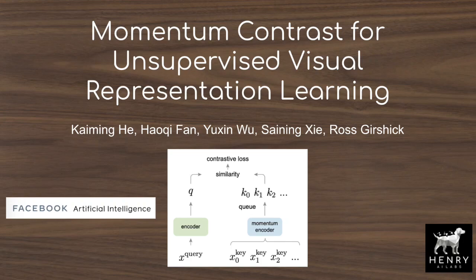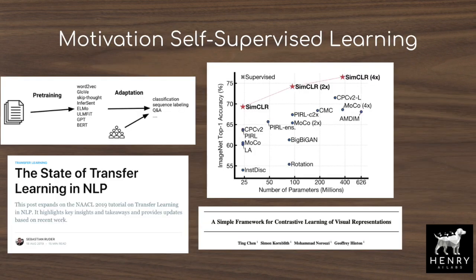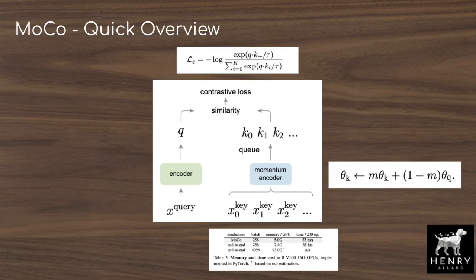This video will explain Momentum Contrastive Learning from researchers at Facebook AI. Contrastive learning is about forming representations that help distinguish one object from another, such as being able to distinguish a lion from a bottle of water. Momentum Contrast views this problem as a dictionary problem to match a query with its positive key encoding and make it as dissimilar as possible to the negative key encodings.